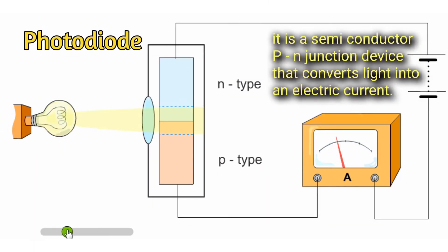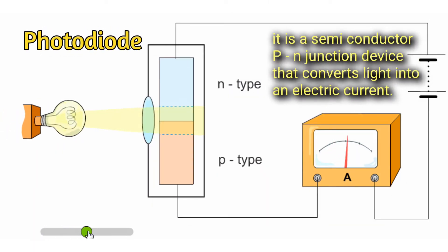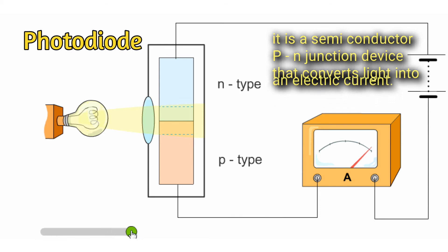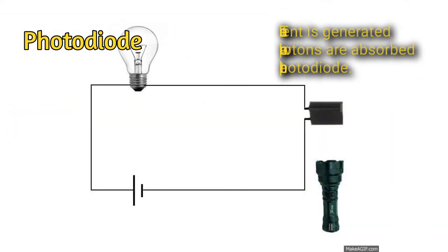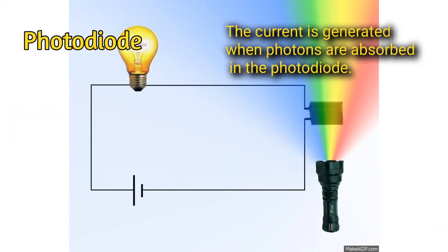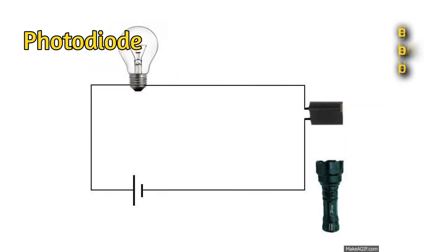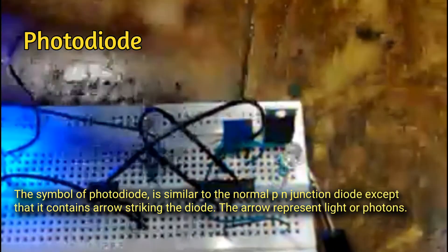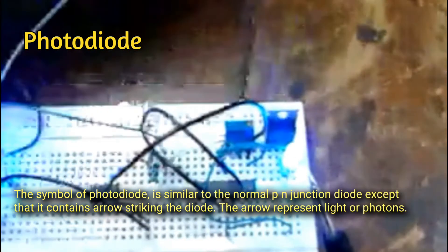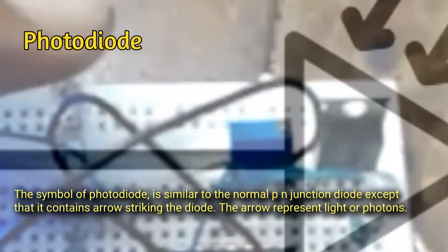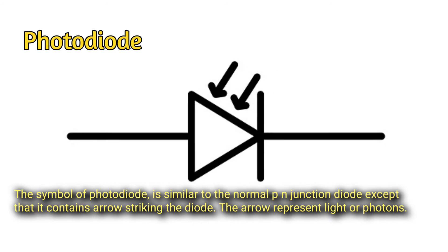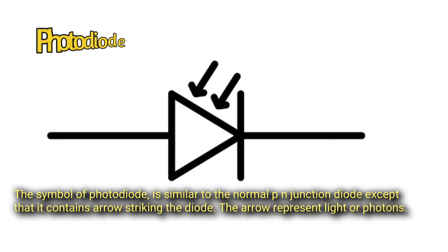Photodiode: it is a semiconductor PN junction device that converts light into an electric current. The current is generated when photons are absorbed in the photodiode. The symbol of a photodiode is similar to the normal PN junction diode, except that it contains arrows striking the diode, which represent light or photons.